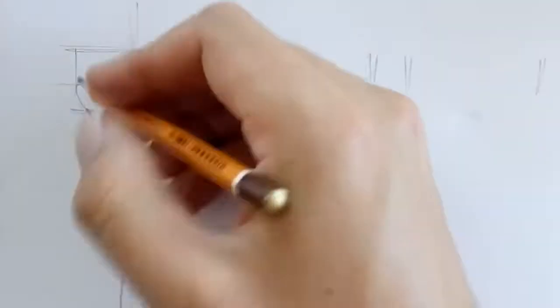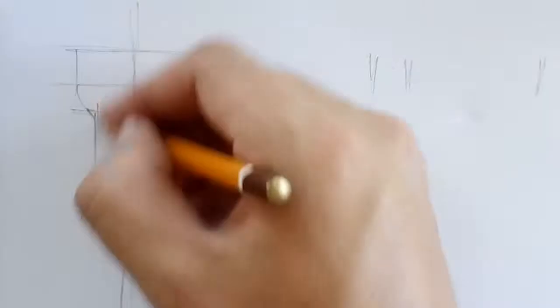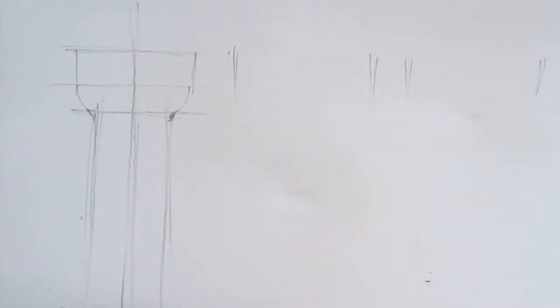The Doric column style is the most plain. This design was used most of the time in public buildings in the earlier times.